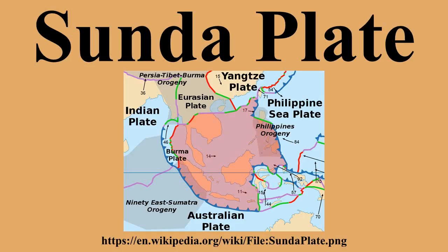The Sundar Plate is bounded in the east by the Philippine Mobile Belt, Molucca Sea Collision Zone, Molucca Sea Plate, Banda Sea Plate, and Timor Plate; to the south and west by the Australian Plate; and to the north by the Burma Plate, Eurasian Plate, and Yangtze Plate.